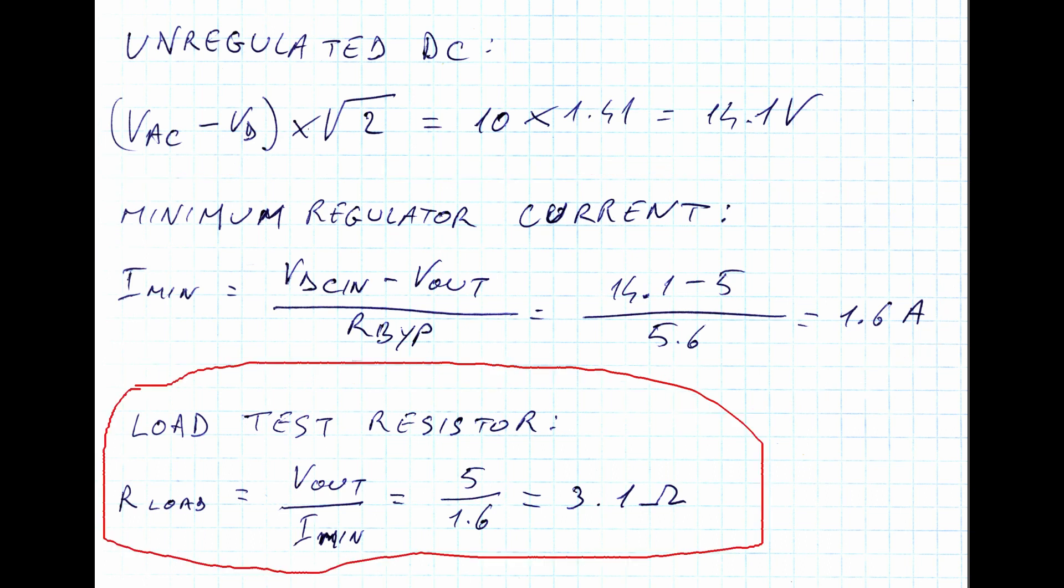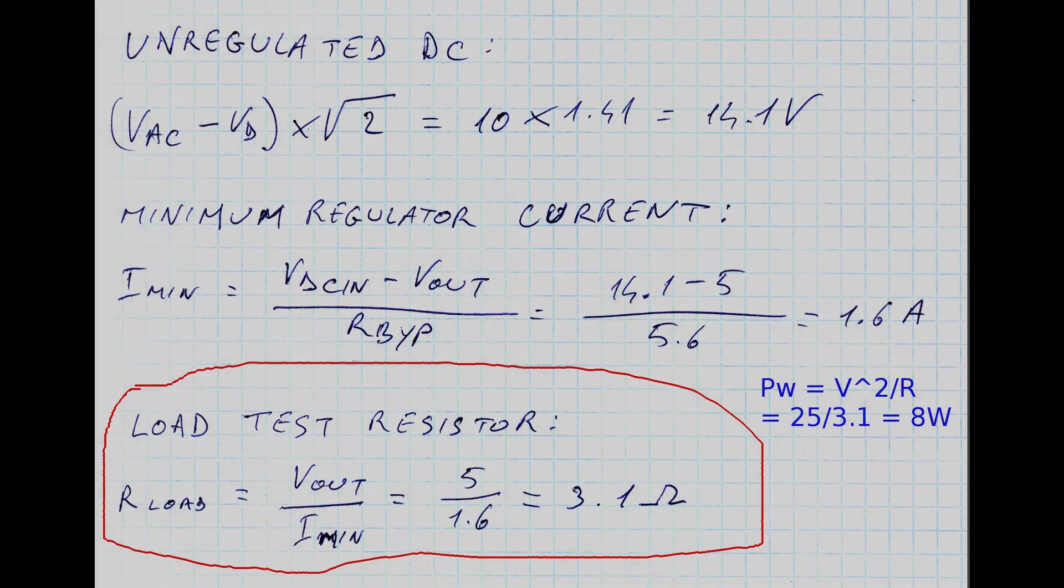And then, we can calculate what is the value for a suitable load resistor to connect between the output and ground to properly test the regulator. This is simply the rated output voltage divided by the minimum load current we calculated before. So, in this case, we obtain 3.1 Ohms. Of course, it is better to use a slightly lower resistor to allow for any approximation we made. The load resistor needs to withstand a power equal to the output voltage squared divided by the resistor value. So, in this case, about 8 Watts. I'm going then to look for two 5.6 Ohms at 5 Watts resistors to be connected in parallel.